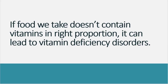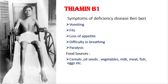If the food we take does not contain vitamins in the right proportion, it leads to vitamin deficiency disorders. The first is thiamine, that is B1. B-complex includes B1, B2, B3, B6, B12, and others. If our food does not contain thiamine, we may get the disease Beriberi. Symptoms of Beriberi are vomiting, fits, loss of appetite, difficulty in breathing, and paralysis. The person is paralyzed and cannot walk on their own. Loss of appetite means the person does not feel hunger.